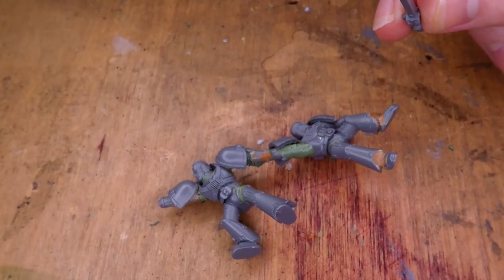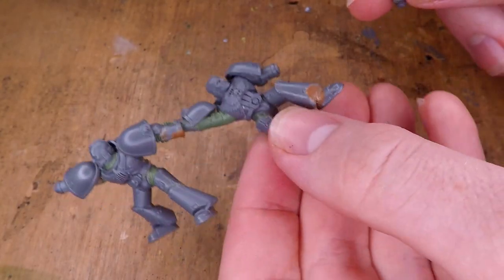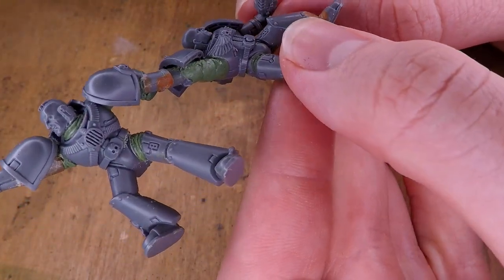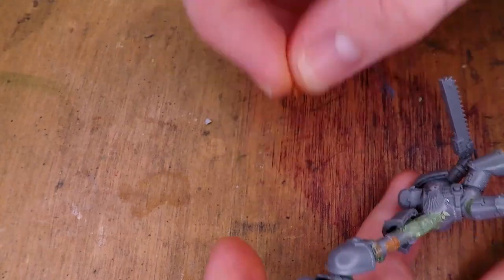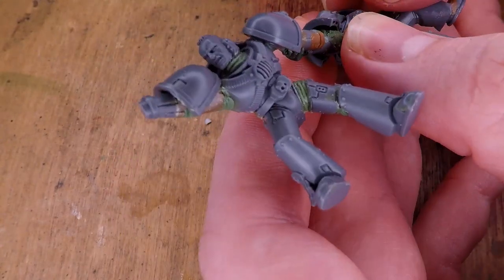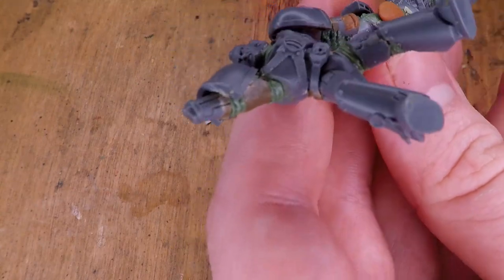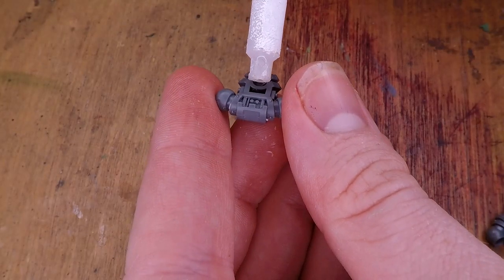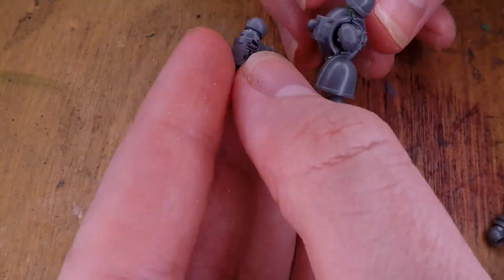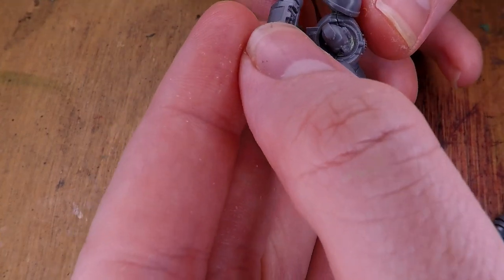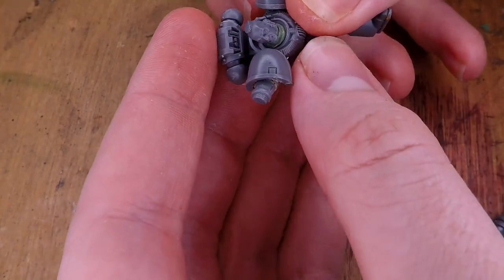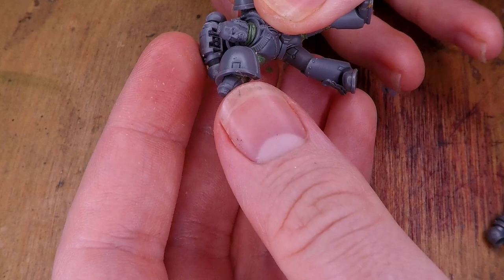I then also add the chainsword that the second figure is going to be wielding, kind of defending himself from the monster that I'm going to be making. And just like the first figure that we had made, I add a little bit of milliput to the arm for the armor there. And while that sets, I attach their backpack things. I don't actually know what these are officially called. Let me know in the comments so that I can actually refer to them properly. But either way, I attach the backpack jetpack thingies onto both of the space marines.